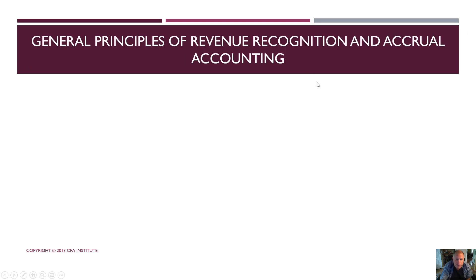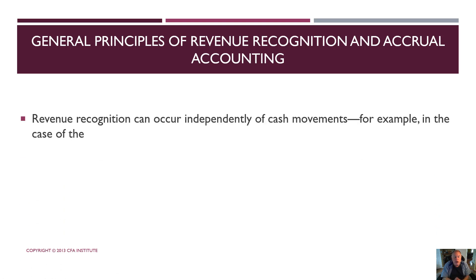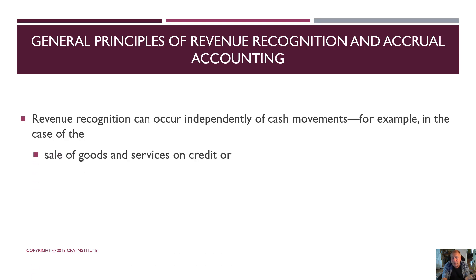Let's start with the basics — the general principle of revenue recognition. Generally, in accrual accounting, revenue recognition can occur independently of cash movements. You can recognize revenue without the cash, and that's the sales of products on credit. We come in with a credit card, and sometimes companies extend credit to other companies.